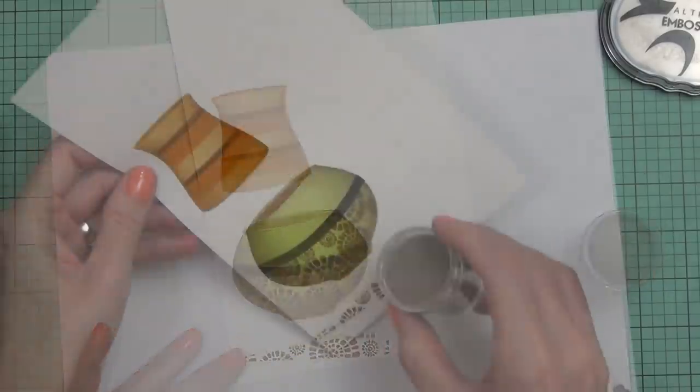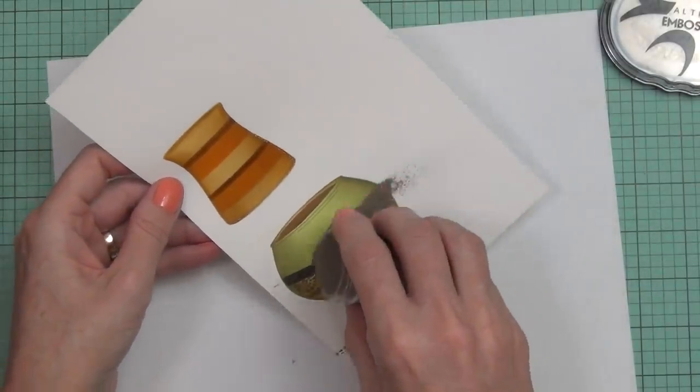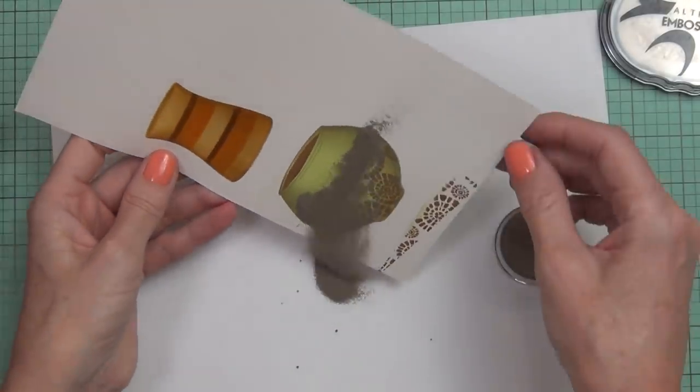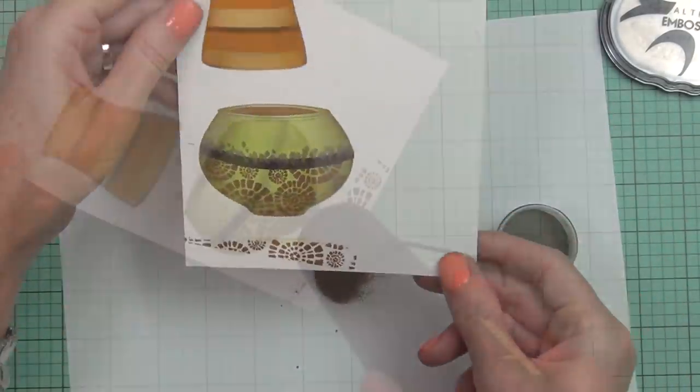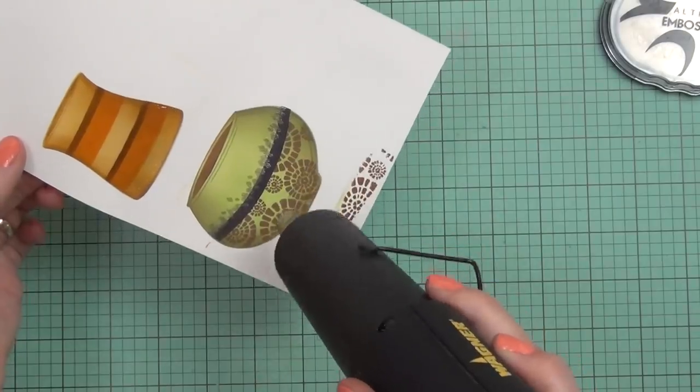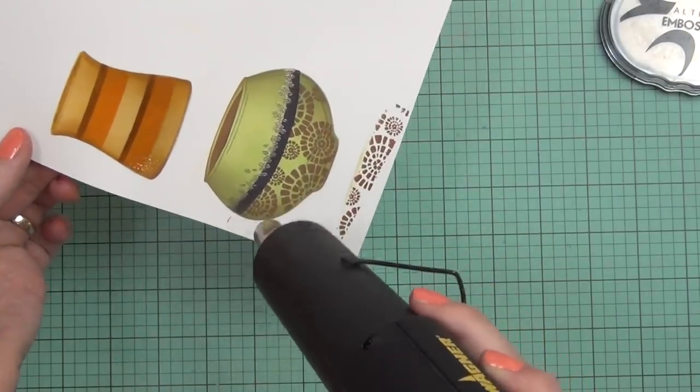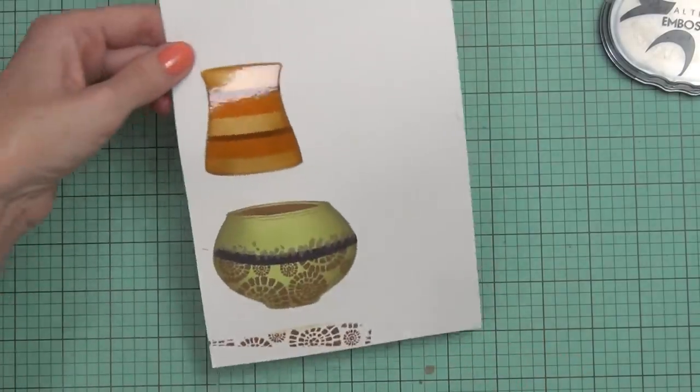For the green one, the big retro style one, I just used my Versamark which is the same or similar product and I just added some dots along there and added some platinum embossing powder this time.